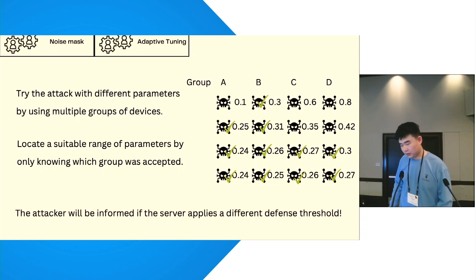we can finally locate a suitable range of parameters by only knowing which group was accepted or not. Furthermore, the tuning can be adaptive because it cannot only locate a fixed parameter, but will also notify the attacker to take any countermeasure when the server is also adaptive or changes its defense to using a different threshold.